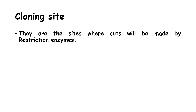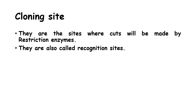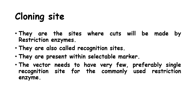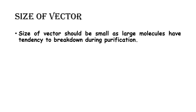Next, we will discuss about the cloning site. These are the sites where cuts will be made by the restriction endonucleases. They are also called recognition sites. They are present within the selectable markers. The vector needs to have very few, preferably single, recognition sites for each restriction endonuclease commonly used. Lastly, the size of the vector should be small, as large molecules have a tendency to break down during purification.